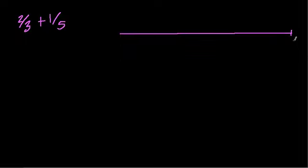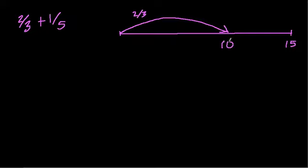Here we're adding thirds and fifths. Thirds and fifths are friendly if we think in terms of 15. Two-thirds, how far am I going to hop? Three goes into 15 five times, so every third is like five. So we're going up two-thirds. It's going to hop all up to 10. Two-thirds is like going up 10 in regard to 15. Those things are the same.